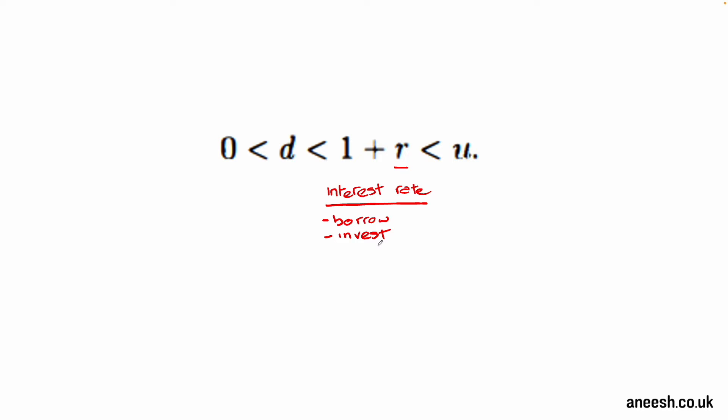We're now just going to run over an assumption we have with regards to R. The interest rate provides a risk-free rate of return on money invested, therefore it must be greater than the down factor from the tails coin flip. If this wasn't the case, you could borrow money at 1 plus R and invest it in the stock and always receive a return regardless of whether heads or tails is flipped.